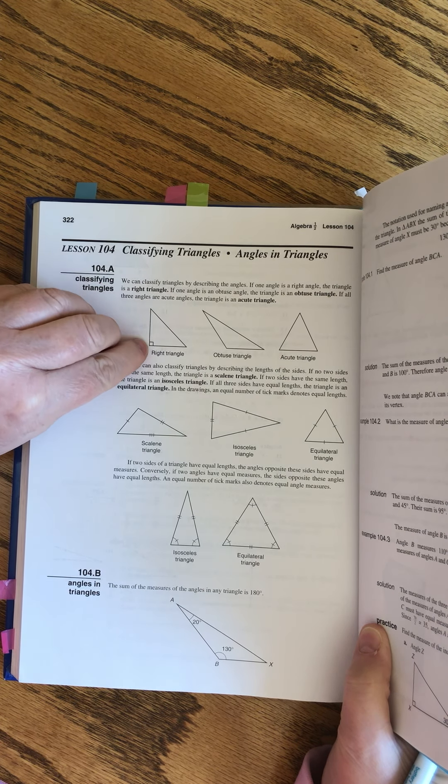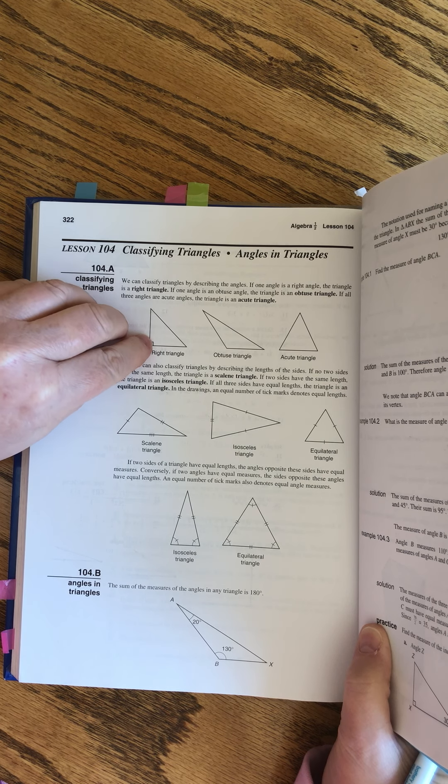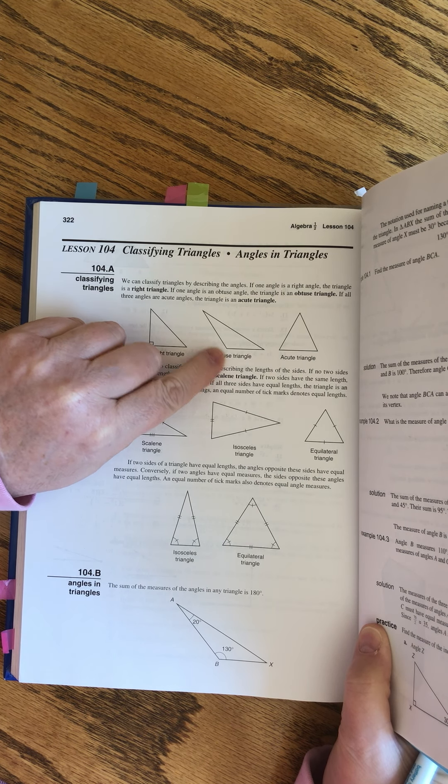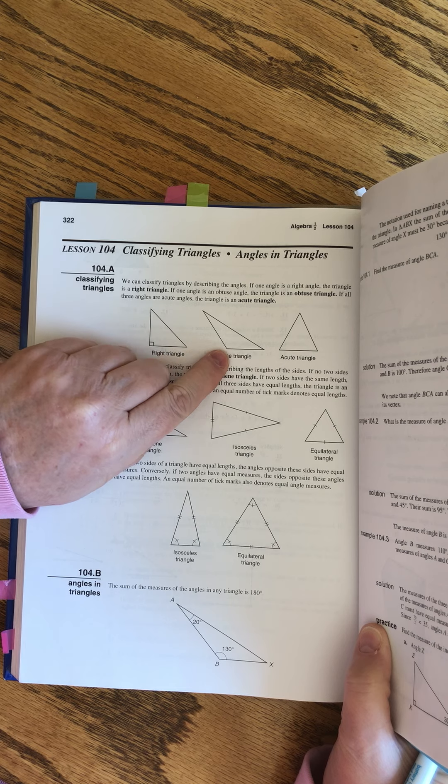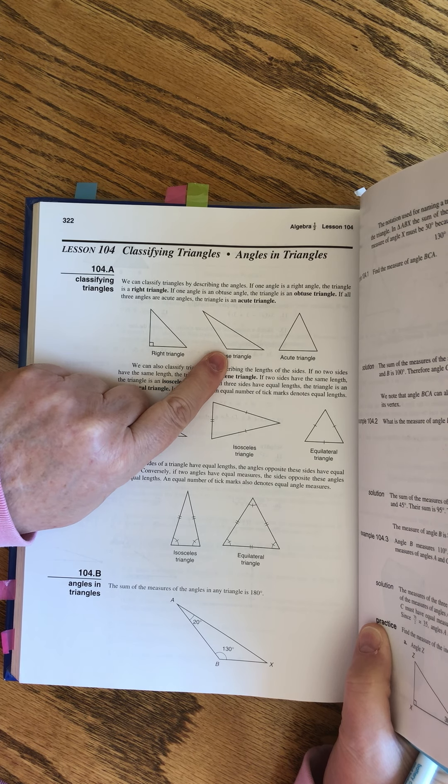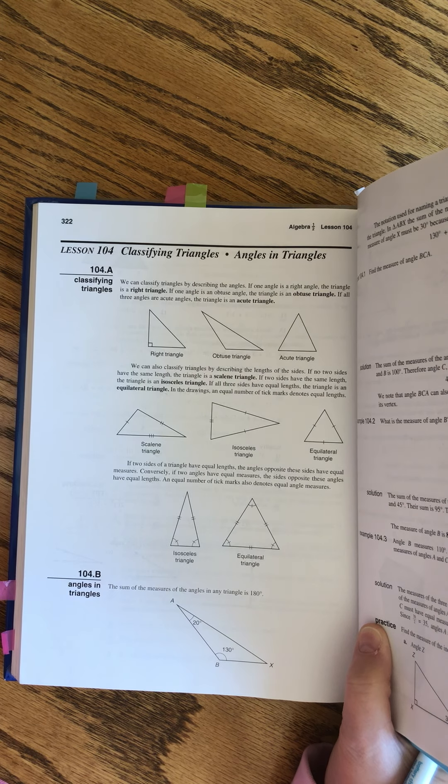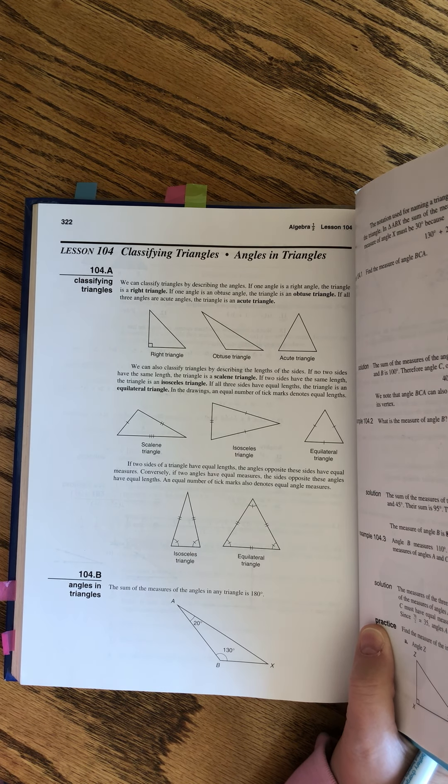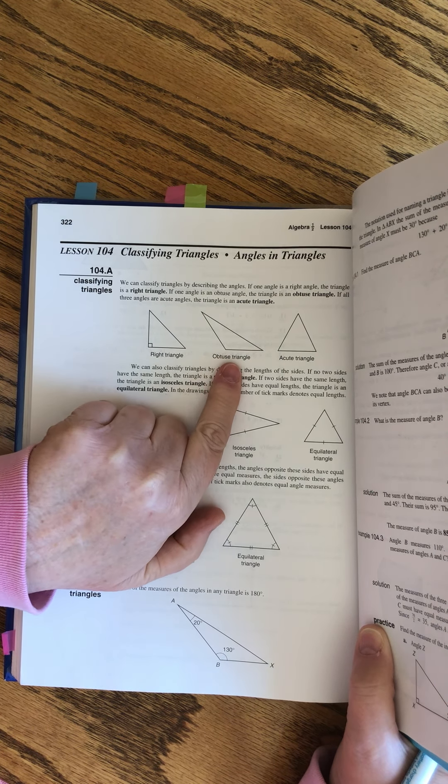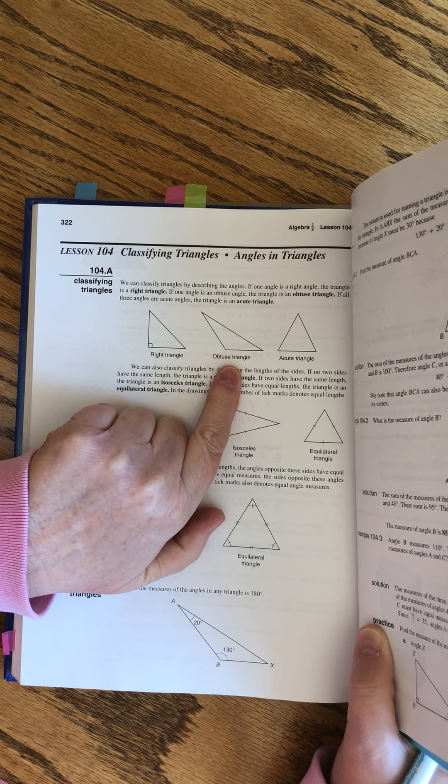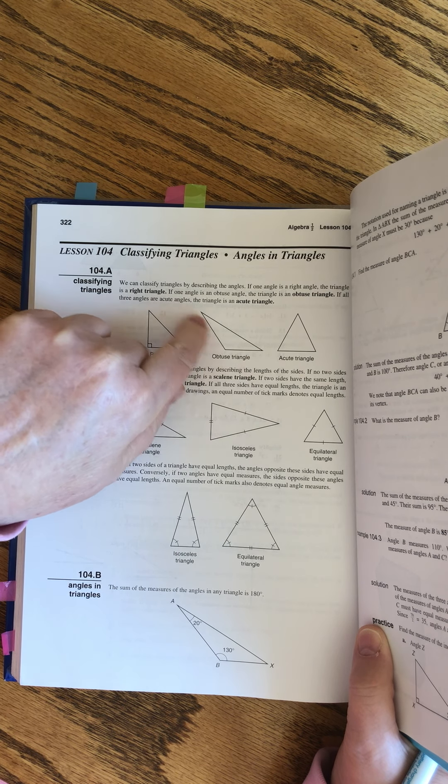By describing the angles: a right triangle has a perfect square in one corner, an obtuse triangle has two little ones but one fatty one that's bigger than 90 degrees, and in an acute triangle all of them are less than 90 degrees. Obtuse sounds like obese, so it's kind of a fat angle, and acute means all three are small and cute.